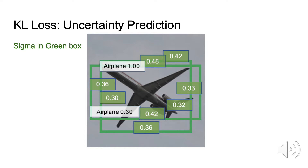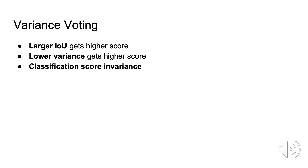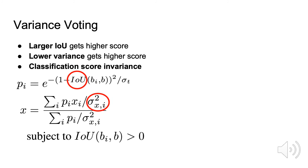The learned variance can also be useful during post-processing, for example the NMS process. We propose variance voting, which adjusts the location of a candidate bounding box using its neighbors' locations weighted by the predictive variances. We have three principles for voting: bounding boxes with larger IoU get higher score; bounding box boundaries with lower variances get higher score; and we avoid using classification score during voting so that there is no misalignment between classification score and localization accuracy.